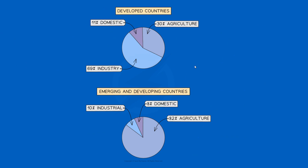This diagram shows the divide in water use between developed countries and developing countries. In the developed country, 69% is often for industry, 30% is for agriculture, and only 11% for domestics. However, in developing countries, 82% is agricultural, 10% is industrial, and 8% is domestic. This proves that developing countries tend to use more water for agriculture and farming than anything else.